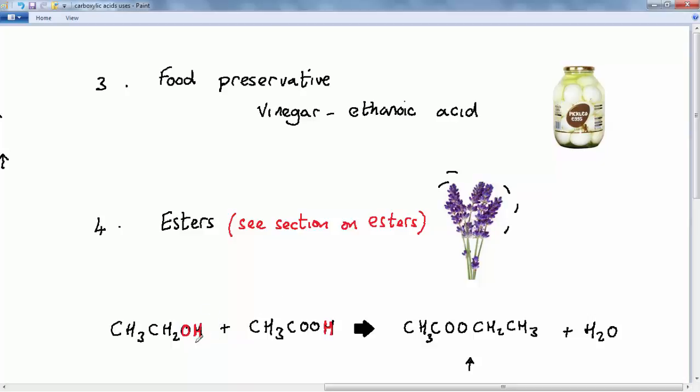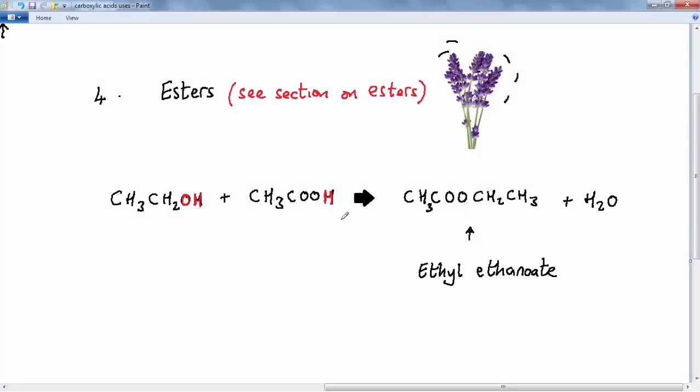And so how are esters produced? Just briefly they're produced by reacting an alcohol with a carboxylic acid. Now we will look at this more closely later on. And that will produce our ester and water. So this hydrogen and the OH group will combine to produce water. And we'll be left with the ester which is ethyl ethanoate. So this is actually the ethanoate group. And this is the ethyl group which is an example of an alkyl chain. Ethyl because in this particular case there are two carbons in the chain.